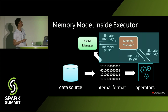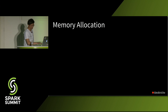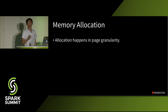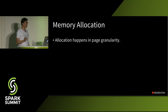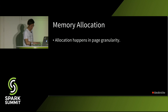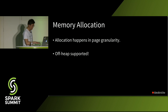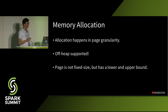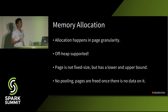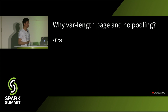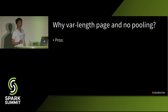Let's see how memory allocation works in Spark. Similar to other systems, Spark allocates memory in page granularity — consumers allocate by pages, not bytes, which is more performant. We also support off-heap memory in Spark, so a page can be either on-heap or off-heap. The page size in Spark is not fixed, but has a lower bound and upper bound. There is no pooling in Spark's memory manager, meaning a page is freed once there is no data on it and we will not reuse the page.